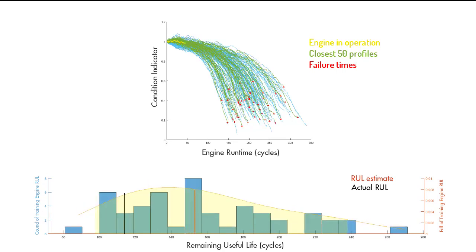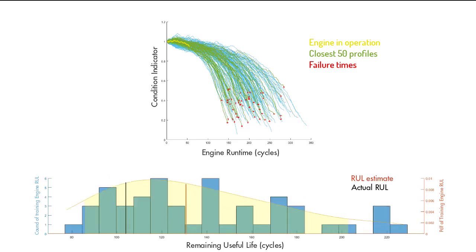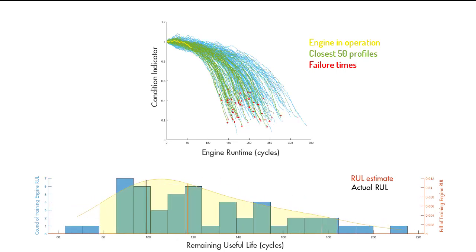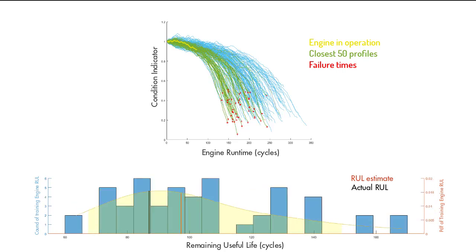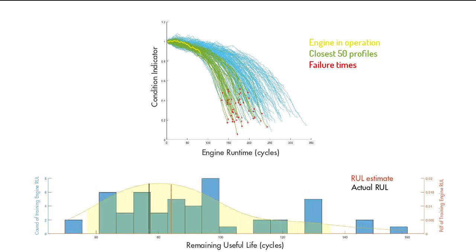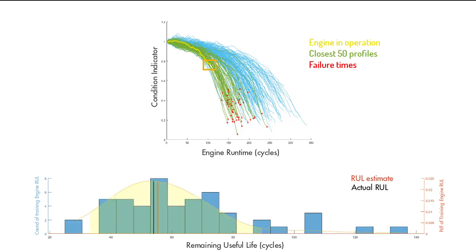As a result of this, the prediction accuracy improves over time. We observe that the closest paths become more concentrated and the predicted RUL starts to converge to the actual RUL. We might consider scheduling maintenance for this engine somewhere around this time as we're getting closer to the expected failure times of other engines.